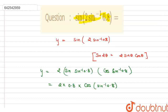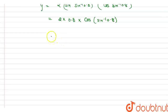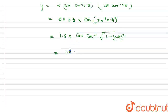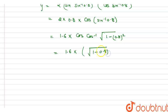Now we can simplify again. We can write cos(sin⁻¹(0.8)) as √(1 − 0.8²). So this becomes 1.6 into √(1 − 0.8²), which is √(1 − 0.64) = √0.36.